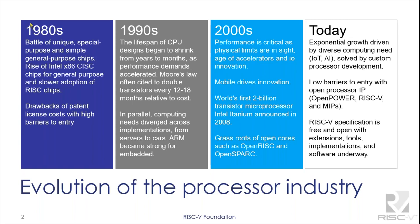So to this very day we have this divergence between the desktop space and the embedded space. In the 2000s, people started becoming concerned about physical limits — for example, Moore's Law. There was lots of innovation in mobile; that was a really key decade for mobile. And there was the Intel processor in 2008, which was the first 2 billion transistor microprocessor. There was still, in terms of RISC, some grassroots open cause, which opened RISC and OpenSPARC.